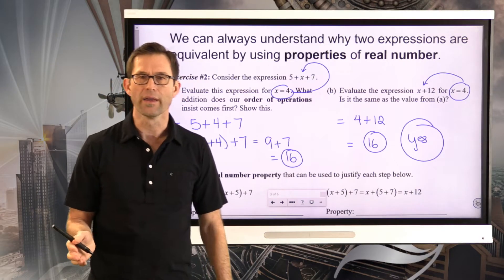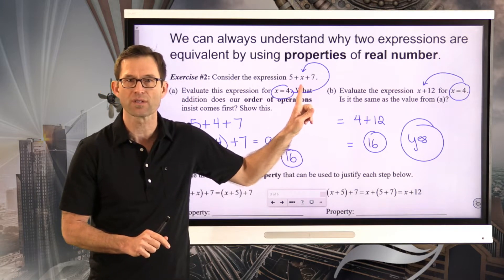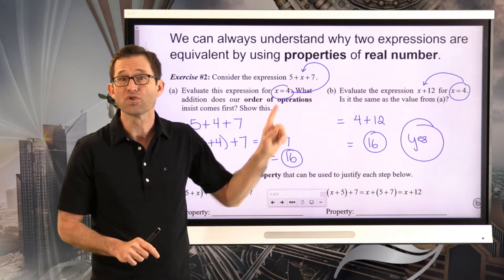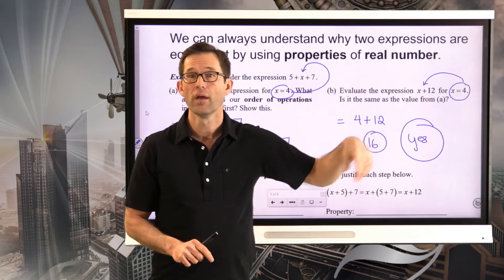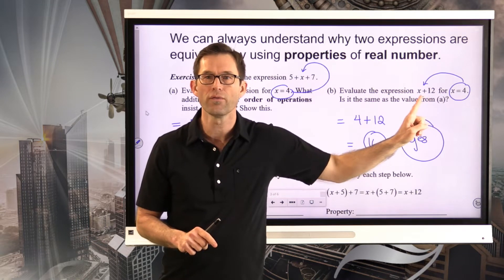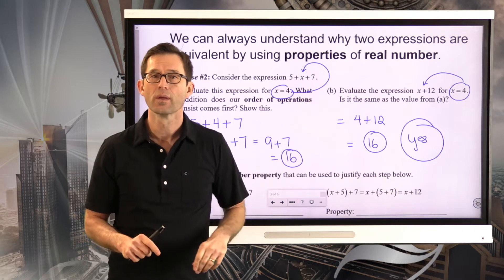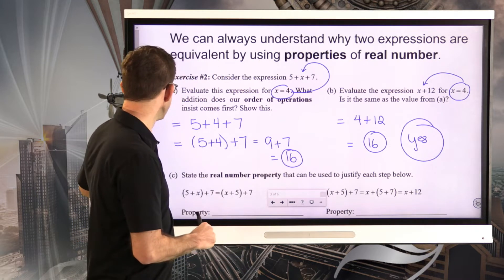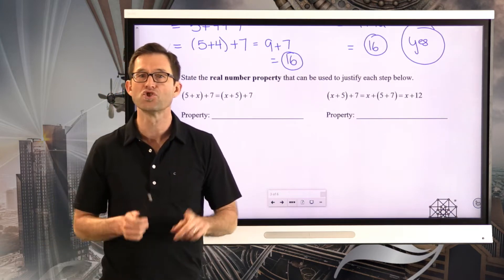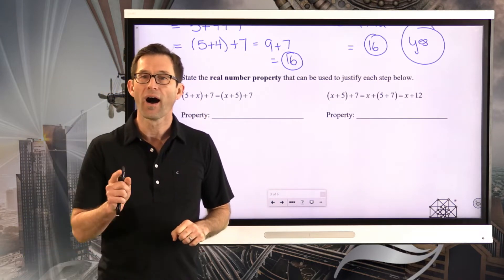It kind of looks like, even though order of operations insists I do 5 plus x first and then add 7, it appears like I could maybe just add the 5 and the 7 to get 12, and then do x plus 12. So it seems like maybe the expression x plus 12 is equivalent to 5 plus x plus 7. But what real number properties justify the fact that when I take 5 plus x plus 7, I get x plus 12?